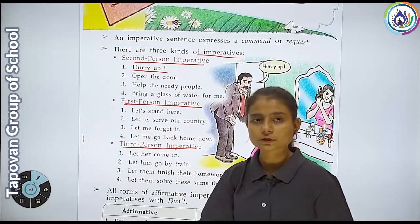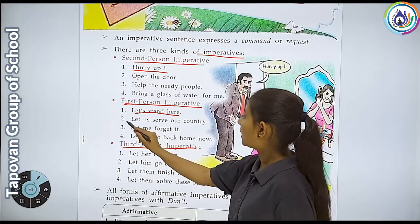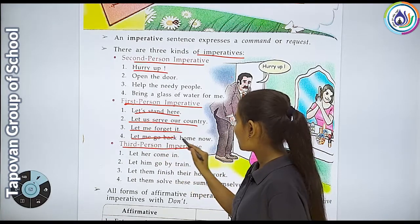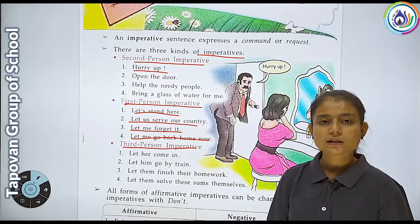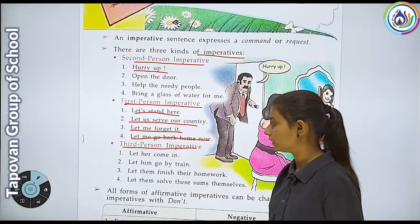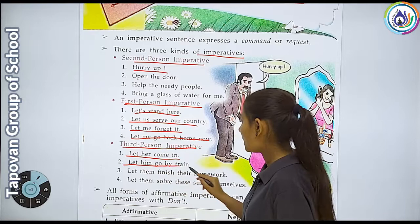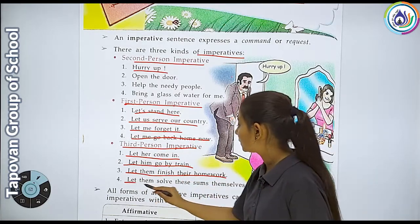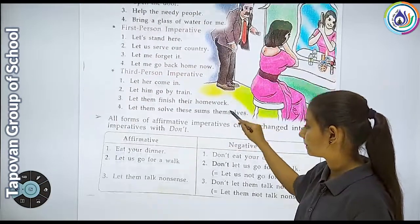First person mein jab hum khud se baat karte hain: 'Let's stand here', 'Let us serve our country', 'Let me forget it', 'Let me go back home now'. Third person imperative mein jab hum kisi insaan ke baare mein baat kar rahe hain aur wo bhi wahan present nahi hota, uske baare mein baat karte hain.